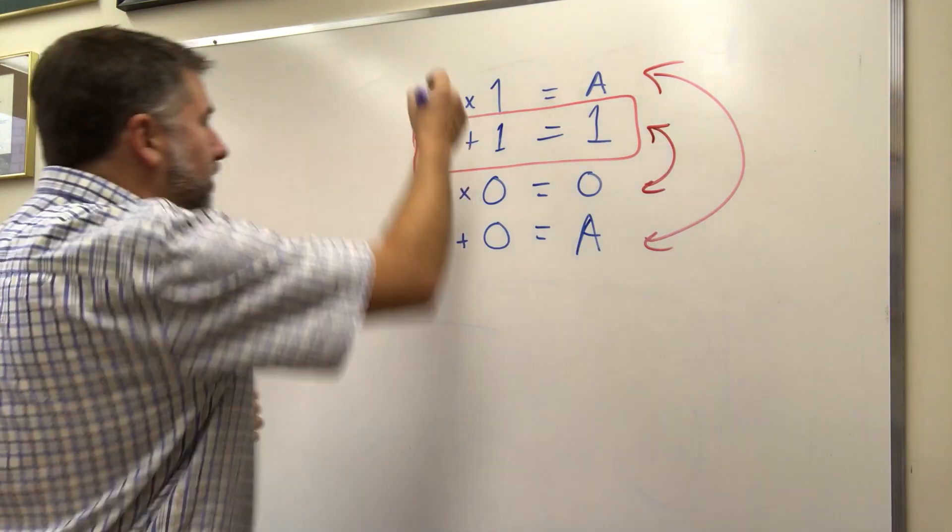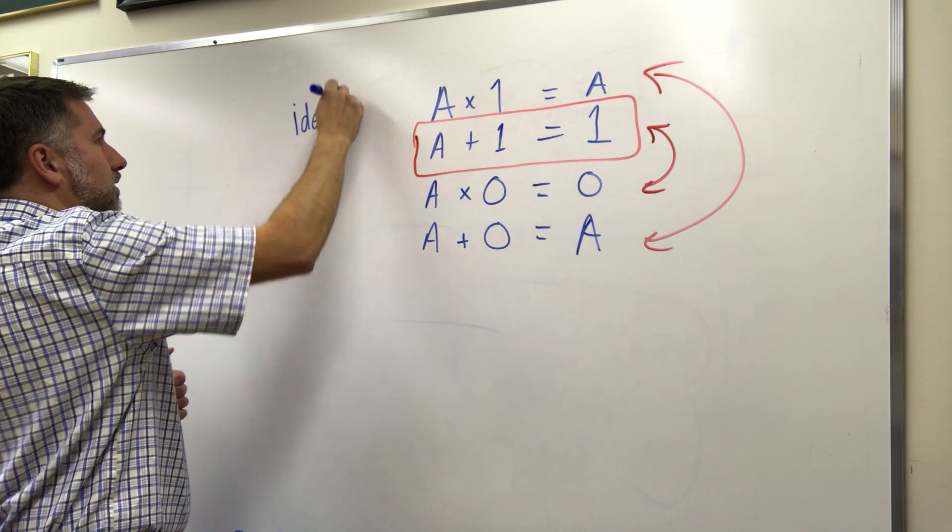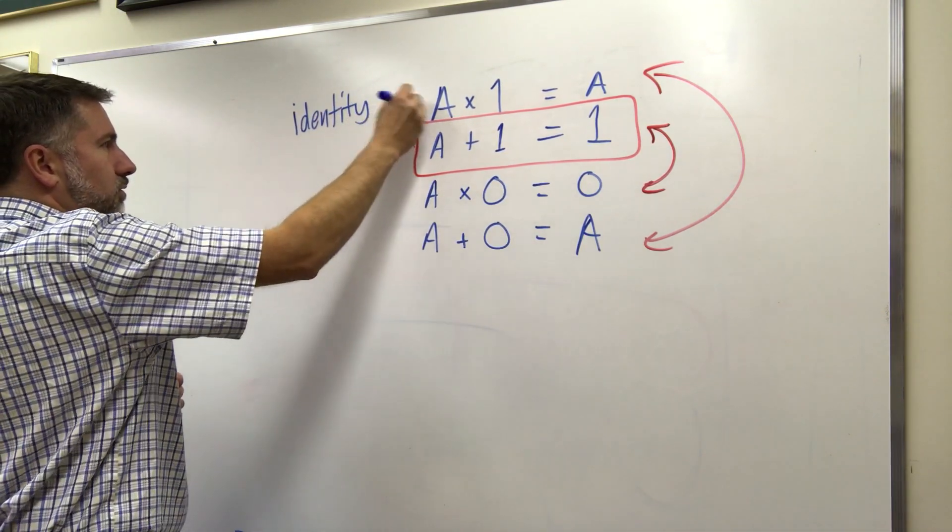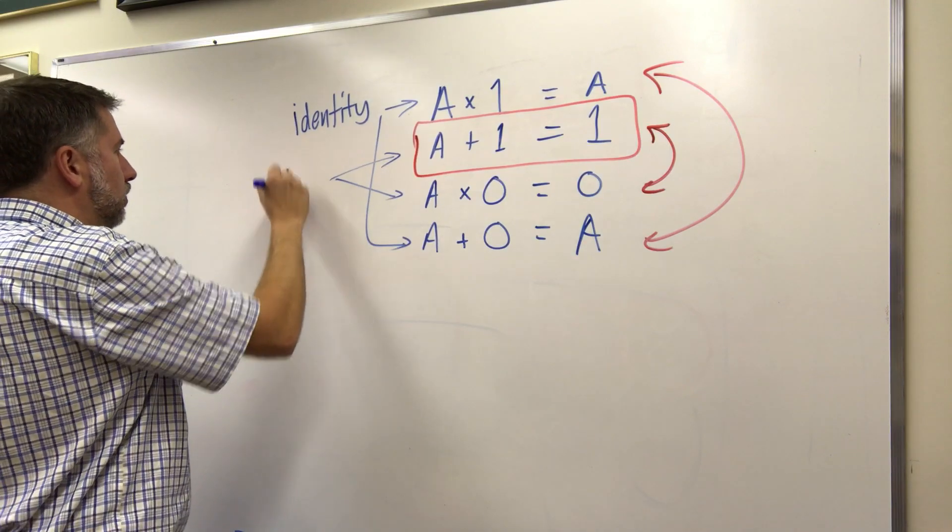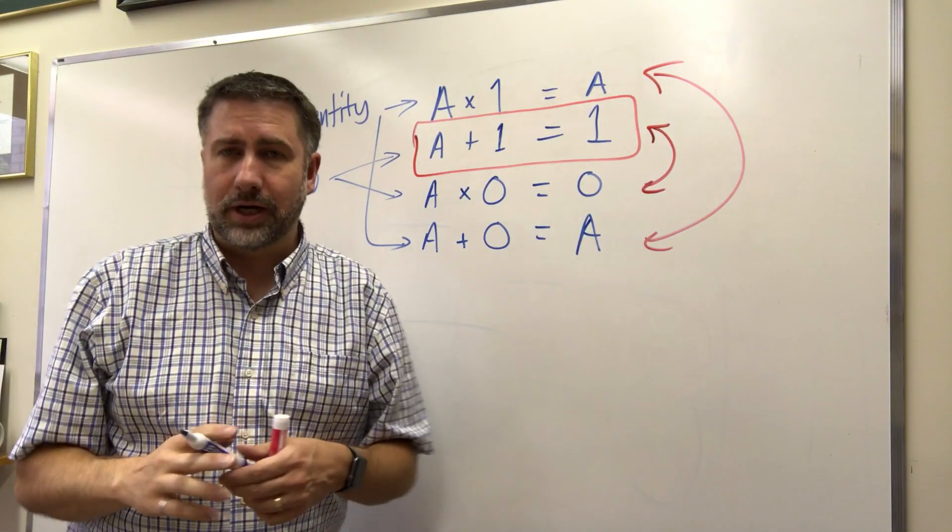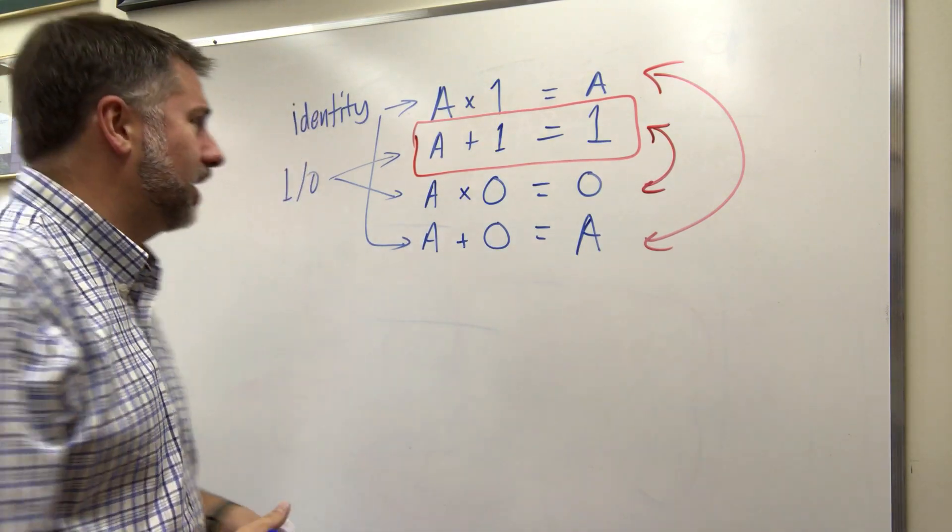These have names, these rules. These are called identities. These two. And these two are called one, zero. And that just means that when you combine with one, you get one, instead of getting the value back again.